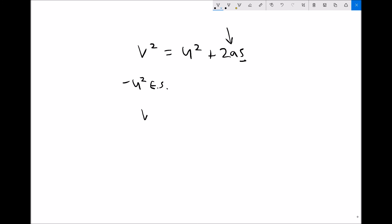So our left-hand side is going to become v squared minus u squared. We've just subtracted u squared from it. And our right-hand side is just going to remain as 2as.